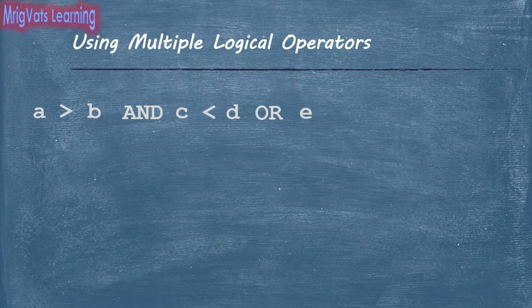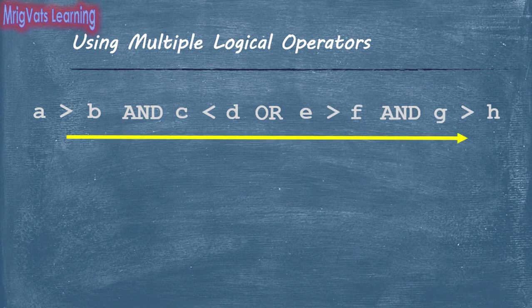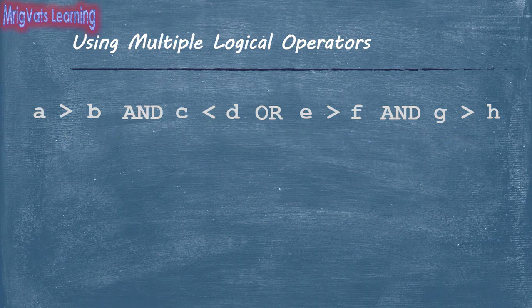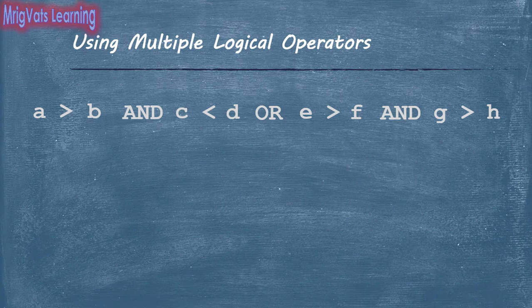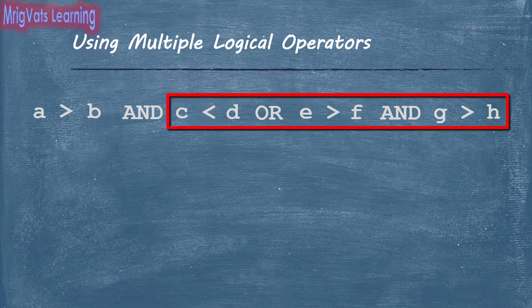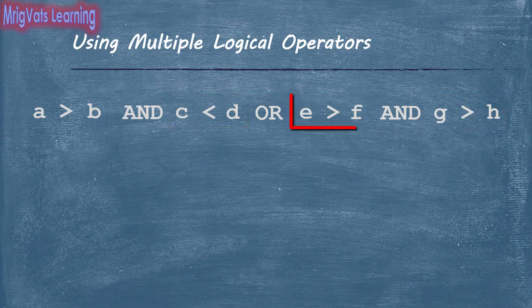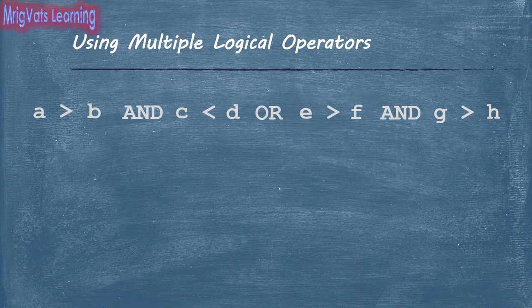When you use multiple logical operators, evaluation takes place from left to right. In case of an AND operator, as soon as the first operand evaluates to true, the second operand is evaluated. However, in case of multiple operators, the entire right-hand side of the AND operator should evaluate to true as a single operand. Therefore, each operand is evaluated step by step, and only if the entire right-hand side operand evaluates to true does the operator give true as an output.